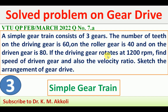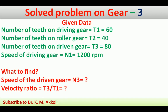The intermediate or roller gear can be used for velocity change. Now we will take the given data and then solve the numerical. The number of teeth on the driving gear T1 is 60, number of teeth on the roller gear T2 is 40, and number of teeth on the driven gear T3 is 80.